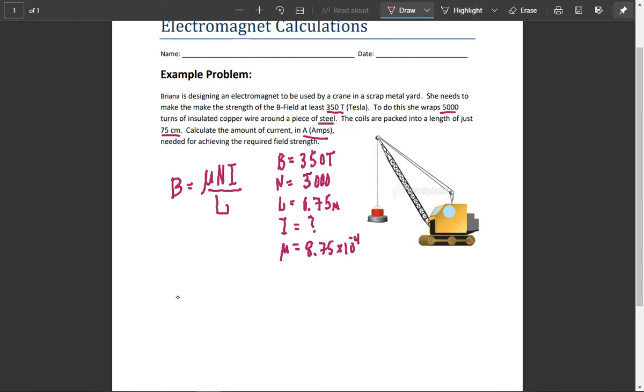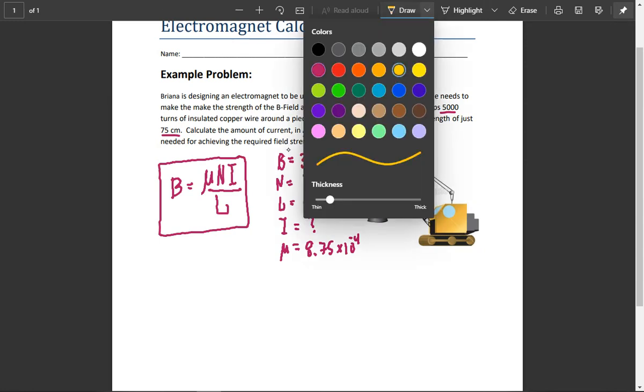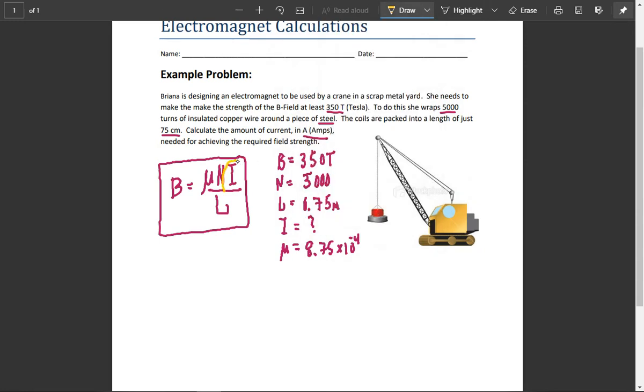Okay, so the first step is to look at the equation and realize that what we're trying to isolate for is I. We're going to do this by cross multiplication.